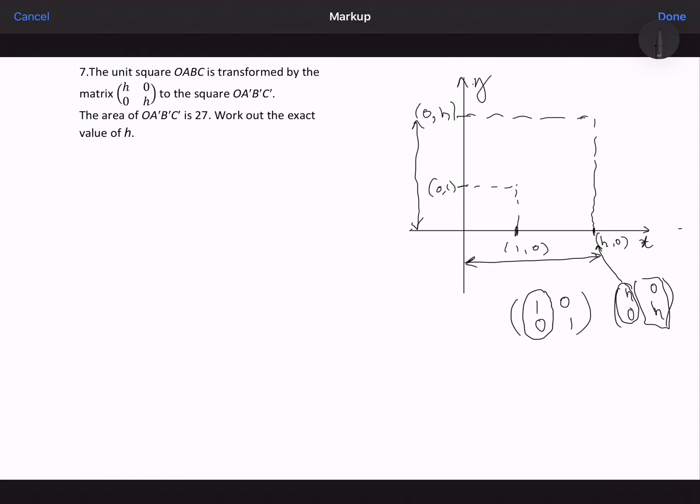So obviously for the area of a square, I'm doing base times height. And that is the same thing in both. So I'm going to say the length is X and the width is also X. So length times width, base times height for this new square, I'm going to get 27.